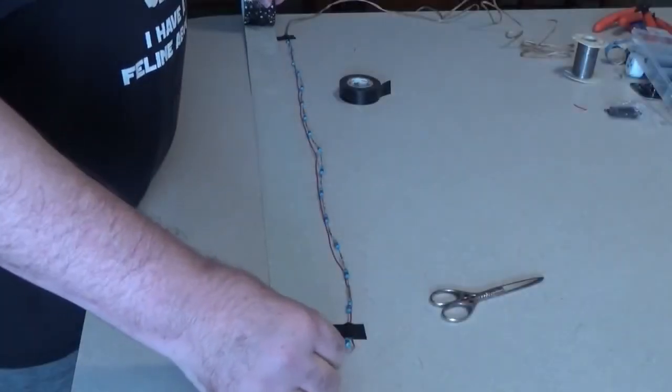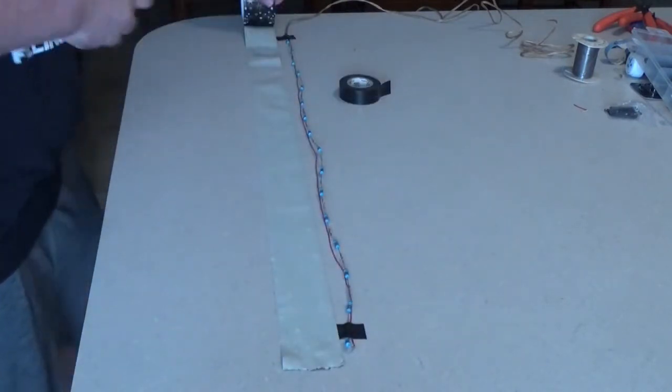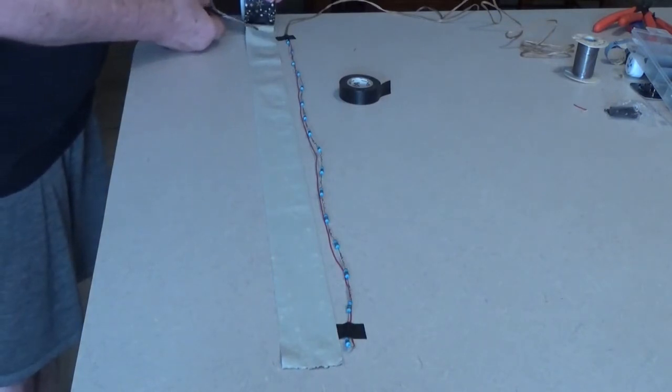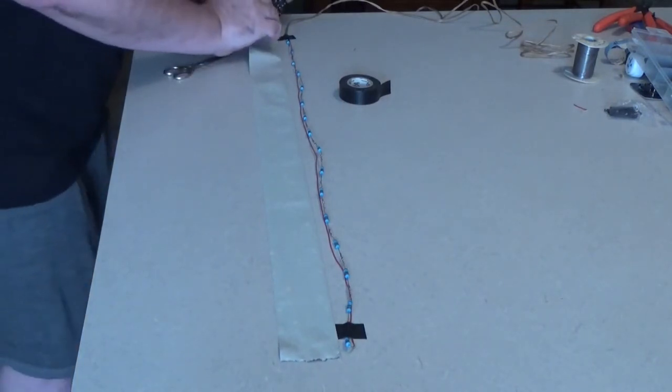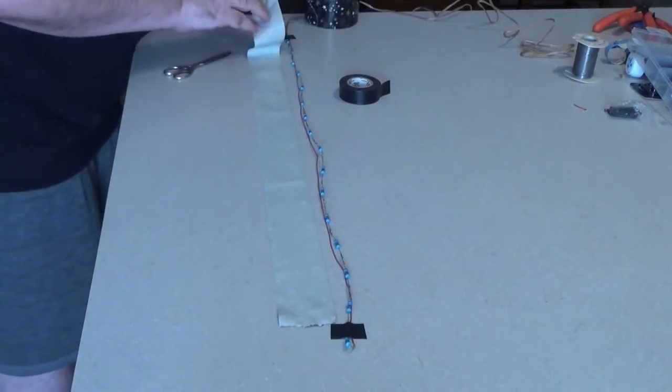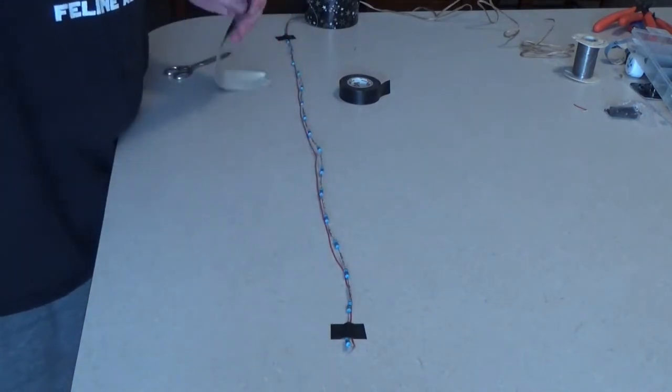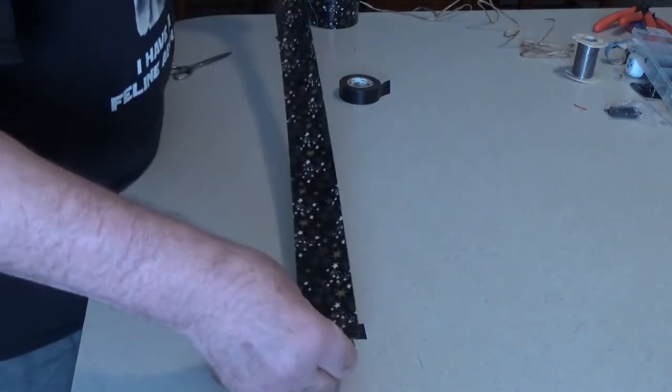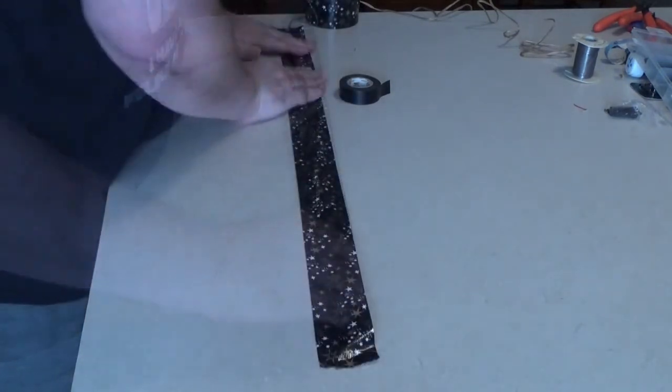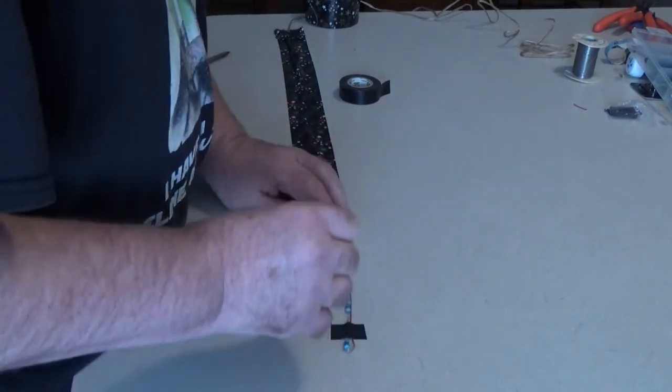To make this next part easier, I taped my resistor array to my kitchen counter with a couple small strips of electrical tape. That held them in a fairly straight line. Measure out just enough duct tape that it will cover the array with about half an inch of tape left over on each end. Flip the tape over and apply it along the length of the array. Try to keep the center of the tape aligned with the resistors.